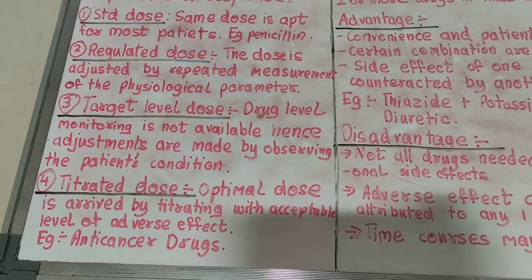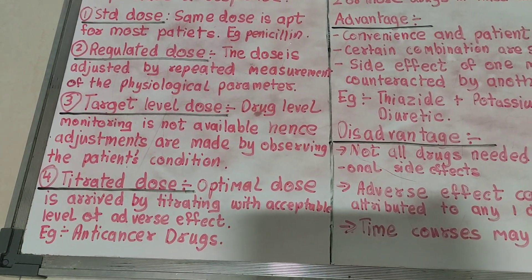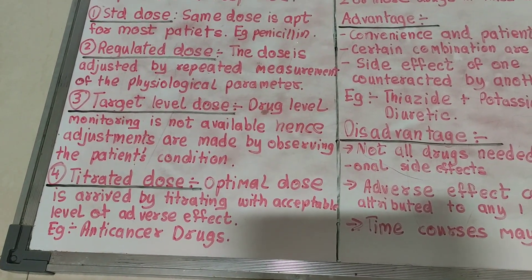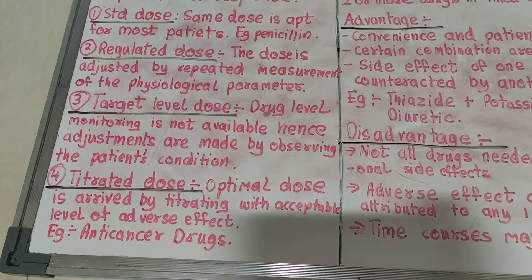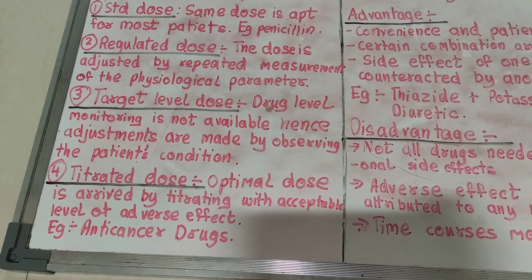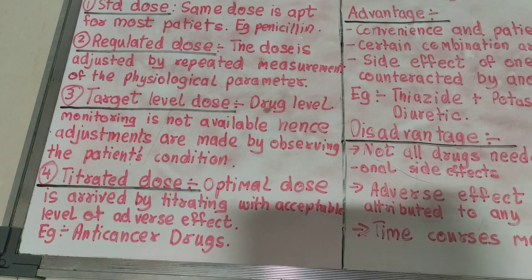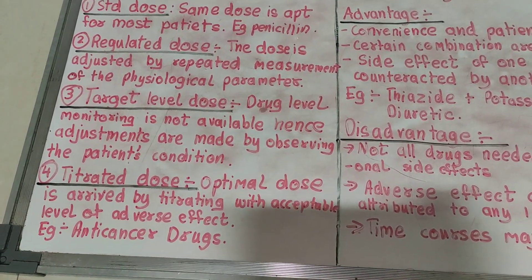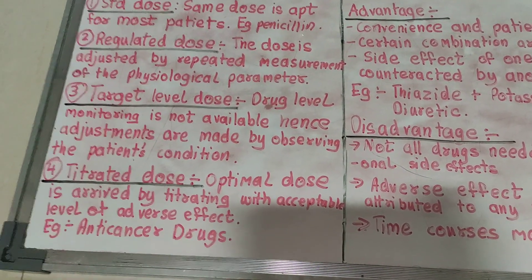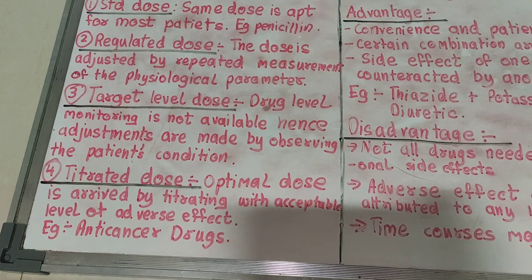Next we come to target level dose. Target level monitoring is not available, so adjustments are made by observing the patient's condition. In regulated dose they observe physiological parameters, whereas in target level dose they observe the patient directly and make appropriate adjustments. There is no accurate range for drug activity, so the patient is monitored, signs and symptoms are noted, and then adjustments to drug level and efficacy are made.